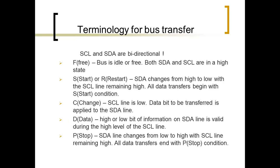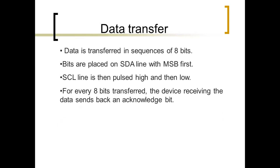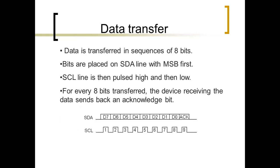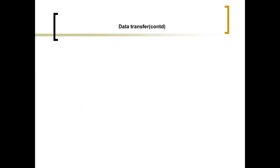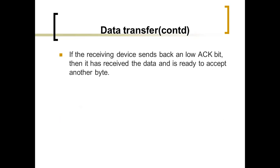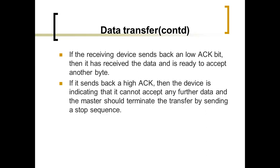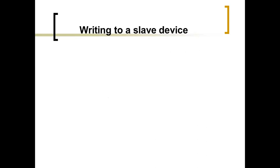SCL and SDA are bidirectional. Data is transferred in sequences of 8 bits, placed on the SDA line with the MSB first. The SCL line is then pushed high and then low. For every 8-bit transfer, the receiving device sends back an acknowledgement bit. A low ACK bit means the device has received the data and is ready to accept another byte. A high ACK bit indicates the device cannot accept any further data, and the master should terminate the transfer by sending a stop sequence.